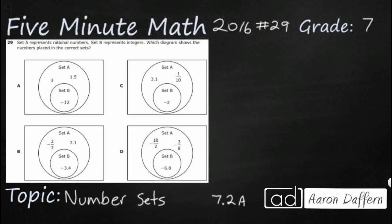So we've got two different sets of numbers here, A and B. In all cases, A is a set of rational numbers, B is a set of integers. And as you can see in all of these, A sits outside of B and B is included within A. So we at least know that.